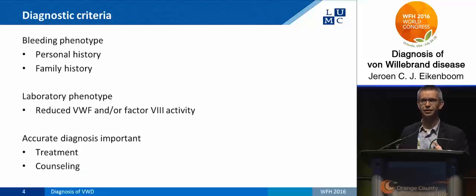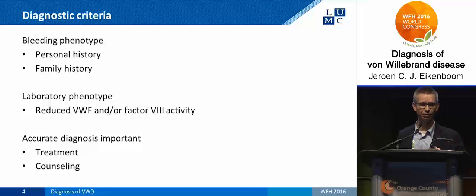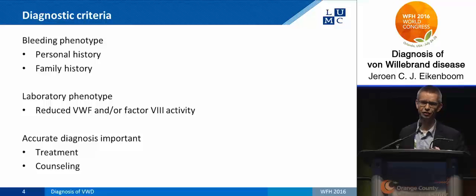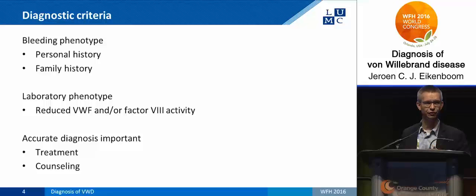The diagnostic criteria consist of a bleeding phenotype — either a personal history of bleeding or a family history of bleeding — and also a laboratory phenotype characterized by reduced levels of fulvirate factor and/or factor VIII.